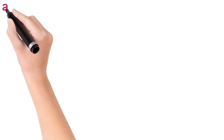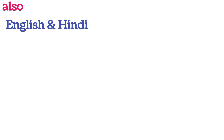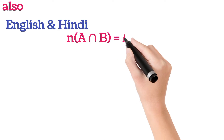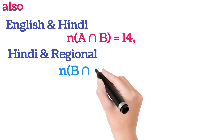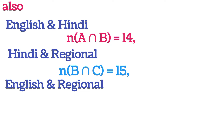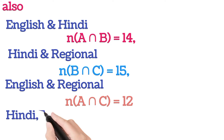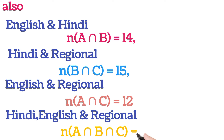It is also given that people who read English and Hindi newspaper, that is N(A ∩ B), is 14. People who read Hindi and regional newspaper, N(B ∩ C), is 15. People who read English and regional newspaper, N(A ∩ C), is 12. And people who read Hindi, English, and regional newspaper, N(A ∩ B ∩ C), is 8.